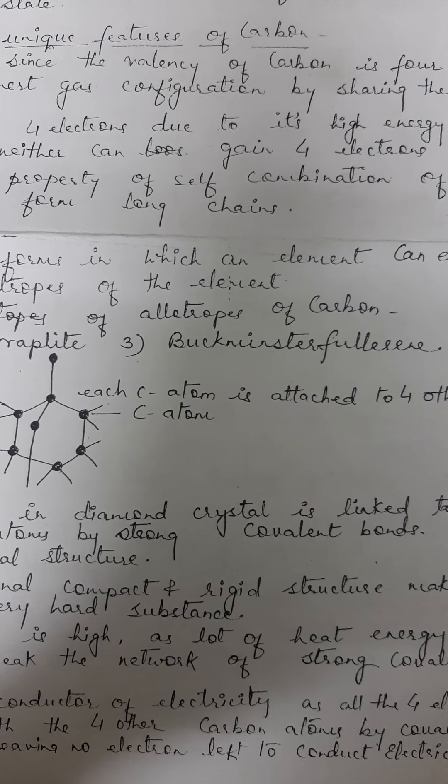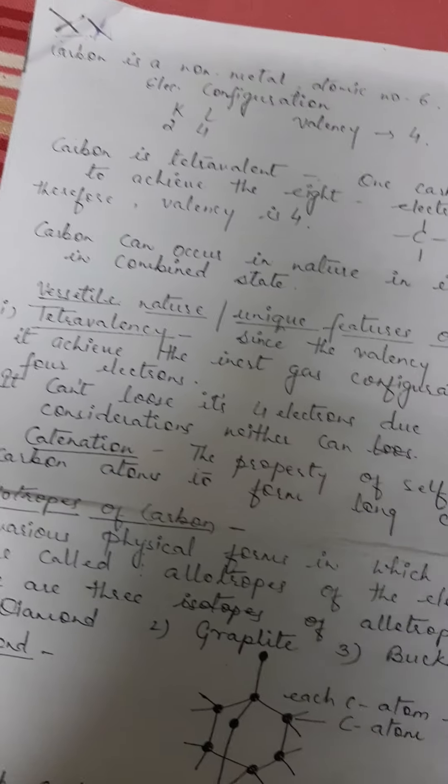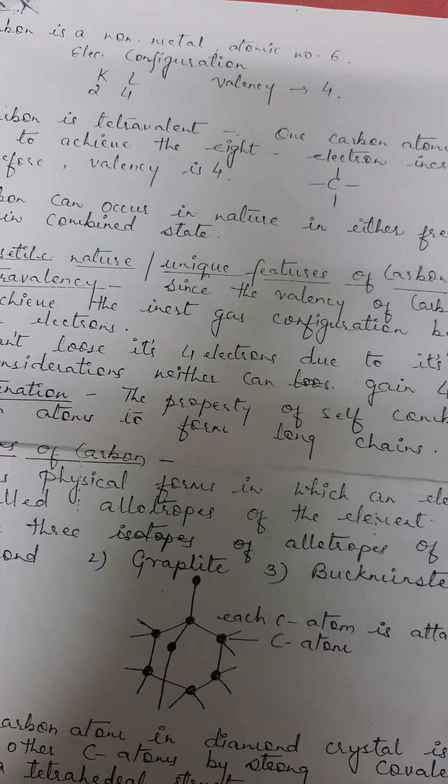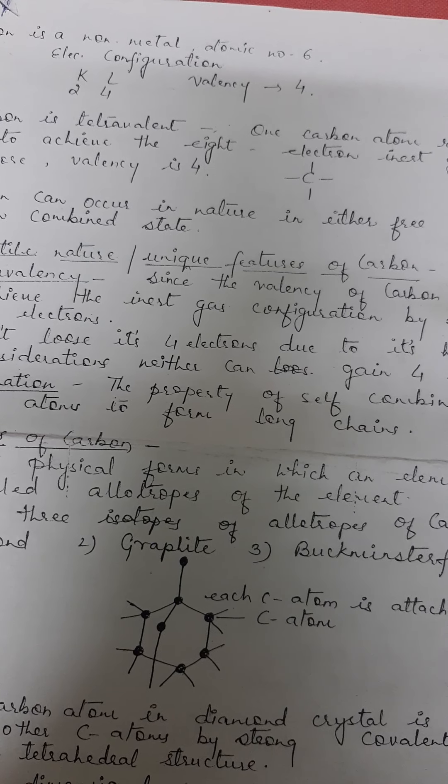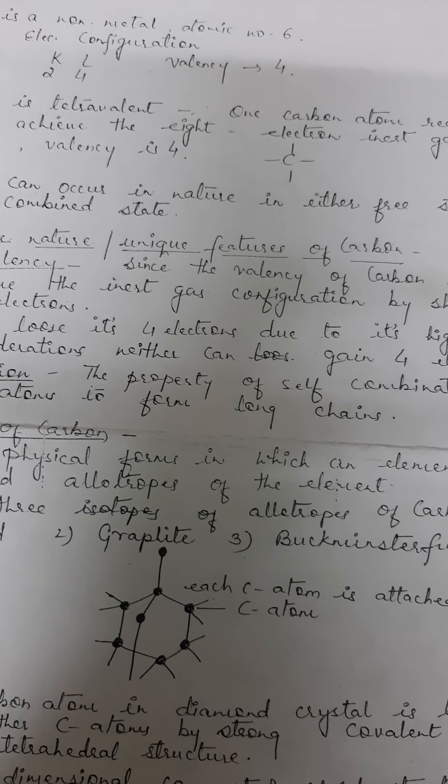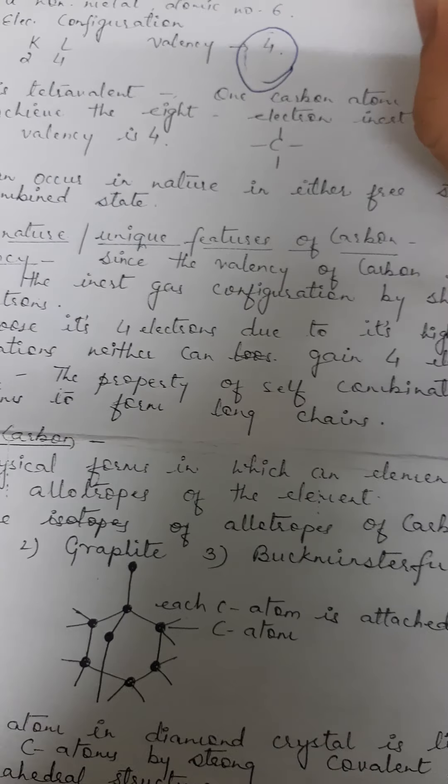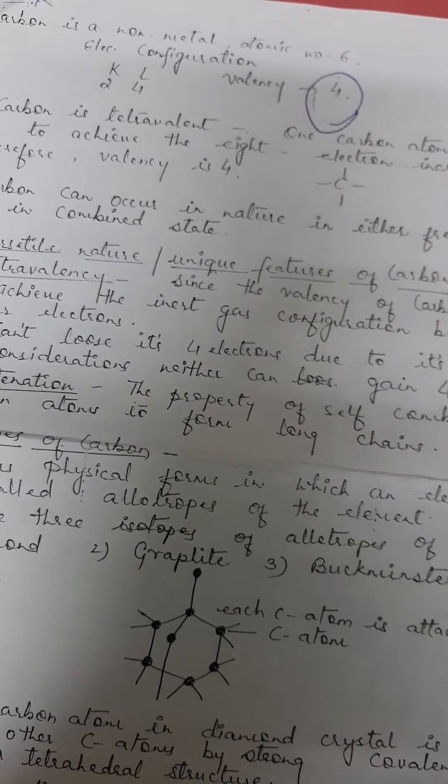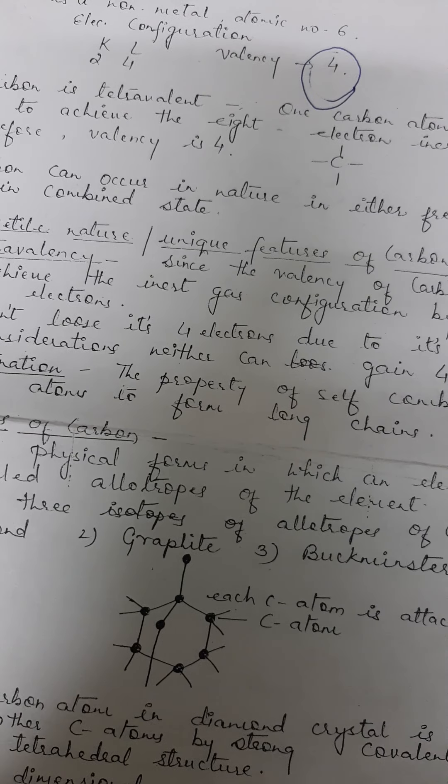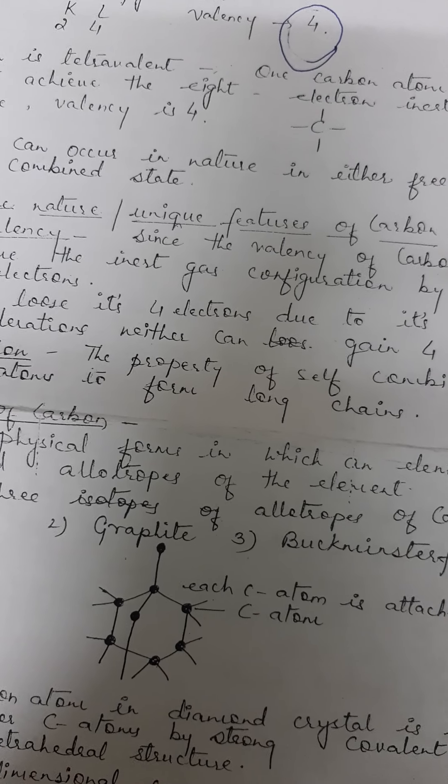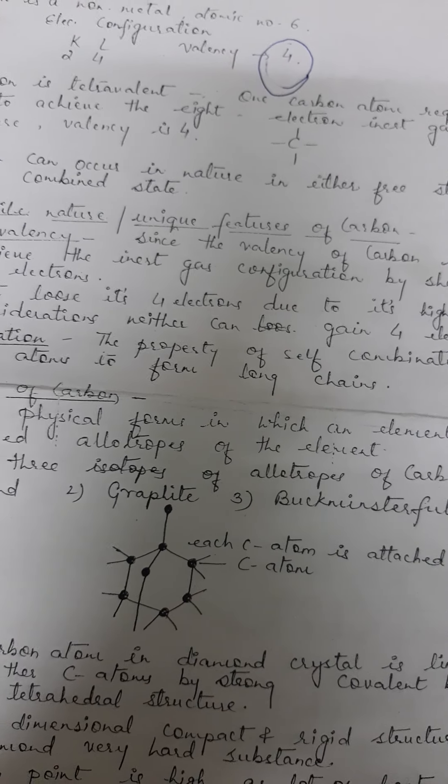As we have already discussed in grade 9, electronic configuration - carbon is a non-metal having atomic number 6, which means 2, 4. The outermost shell has 4 electrons, 4 valence electrons, so the valency is 4. That is, the valency of carbon is 4. This is an important property because carbon is tetravalent in nature.